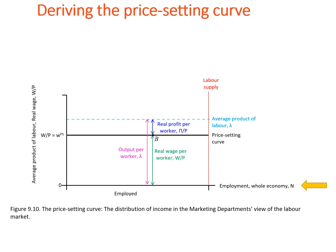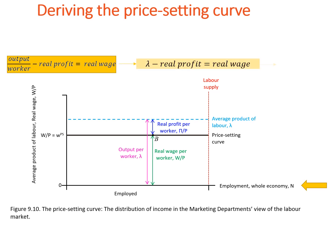The real wage can be at most equal to the average product of labor, which means that the blue line indicating the average product of labor is above the real wage line described by the price setting curve.